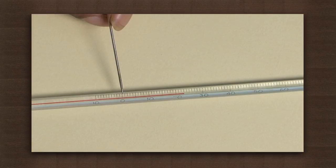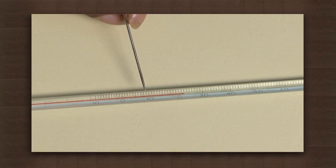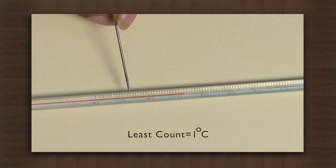Now we have a thermometer here. Look carefully. This is the zero degree mark and this is ten degrees. The distance is divided into ten divisions, so the least count is one degree Celsius.